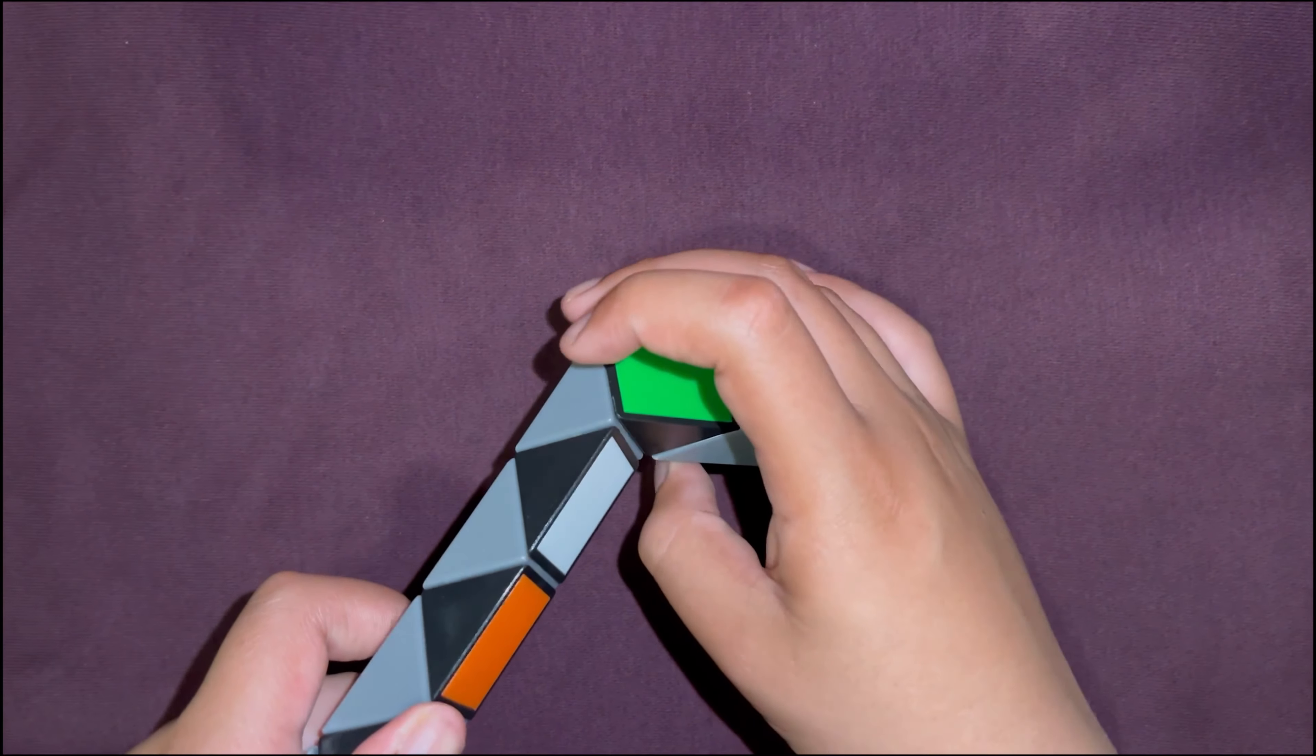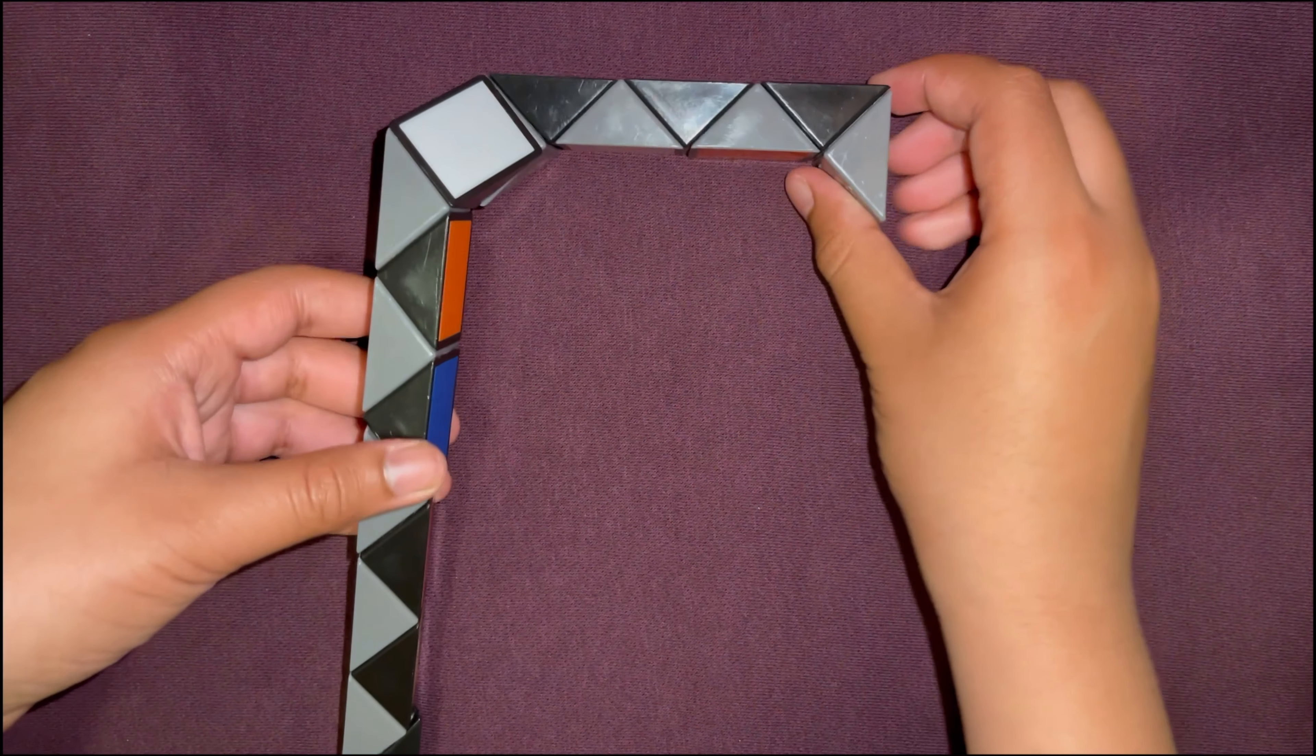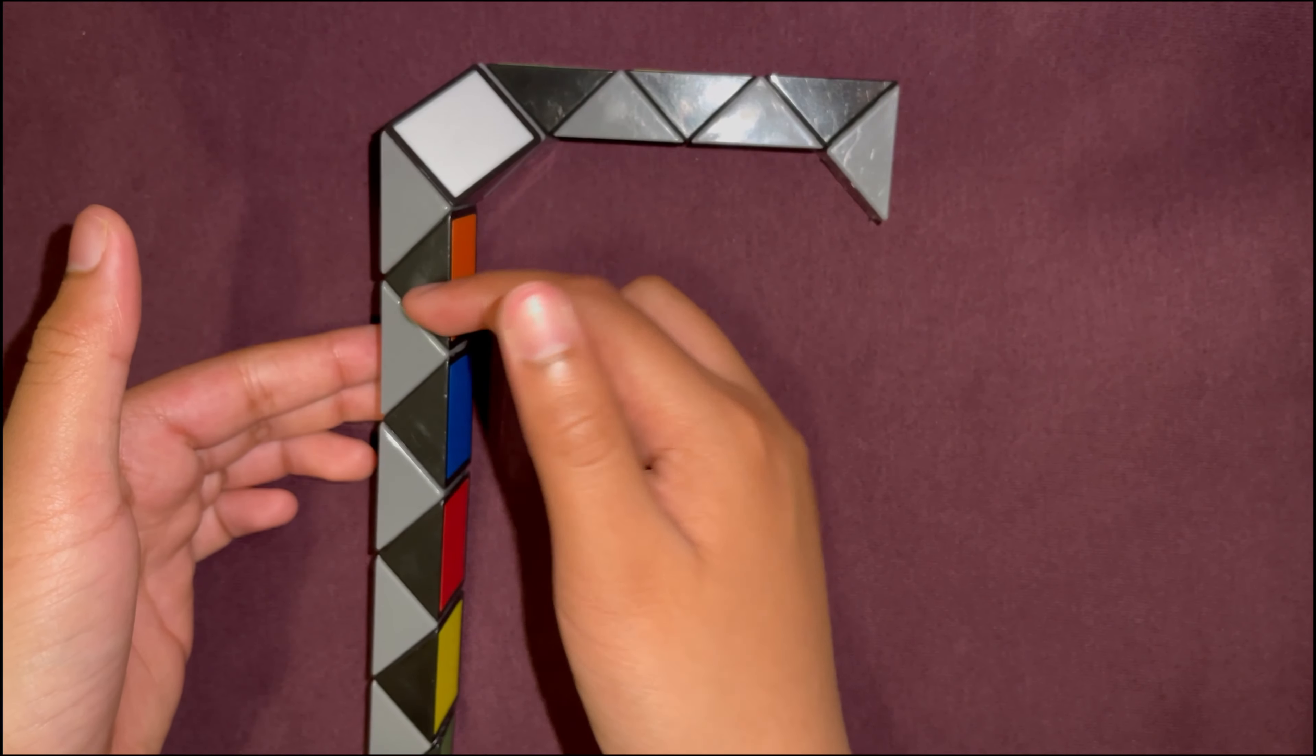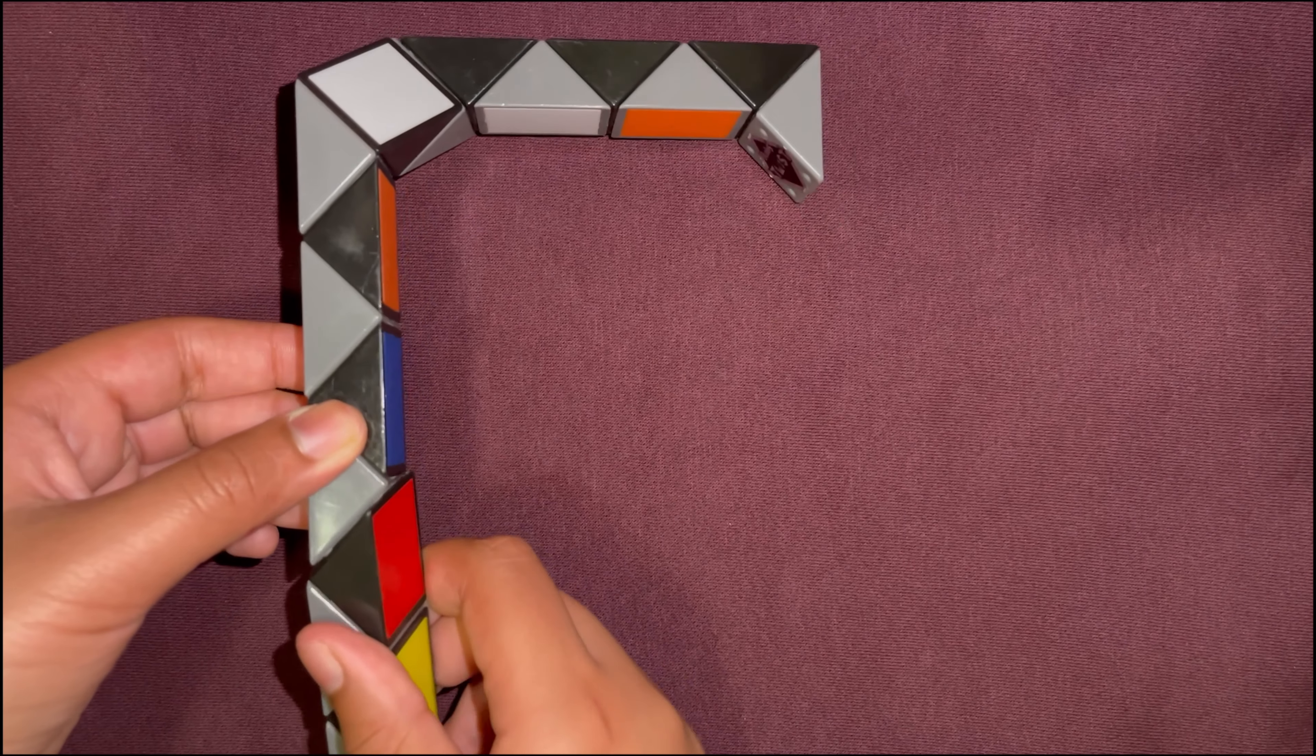Now you're going to count one, two blocks, and then turn this third block down. Now you're going to count another five—one, two, three, four, five—turn this sixth block down.